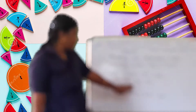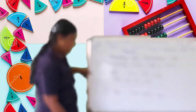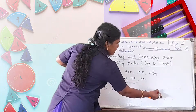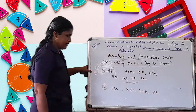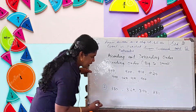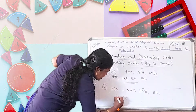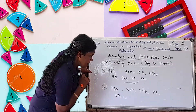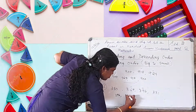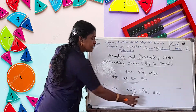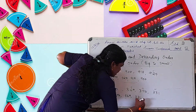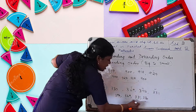One more question: 330, 316, 396, and 331. Which is the greatest? Yes, 396. So descending order is 396, then 331, then 330, and the last number is 316. This is the descending order.